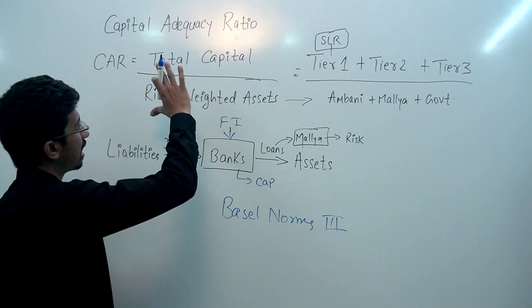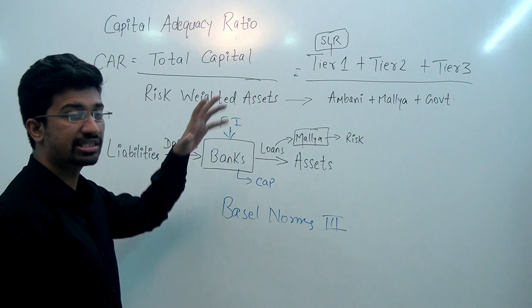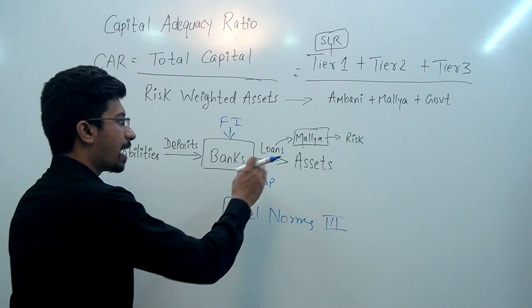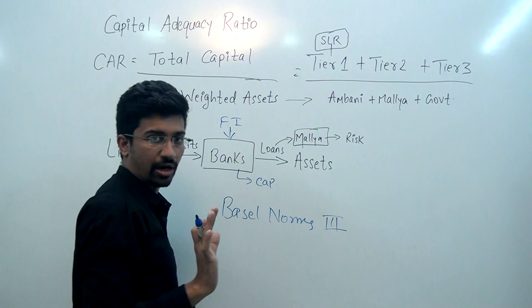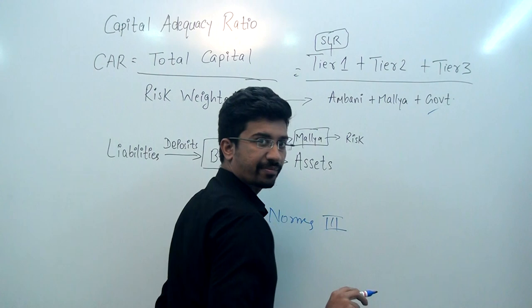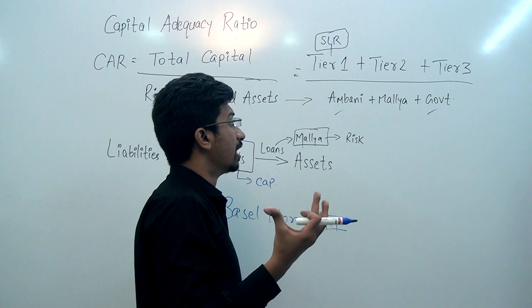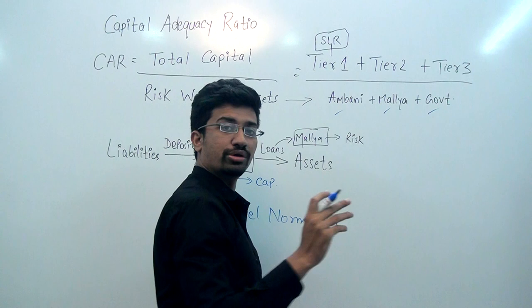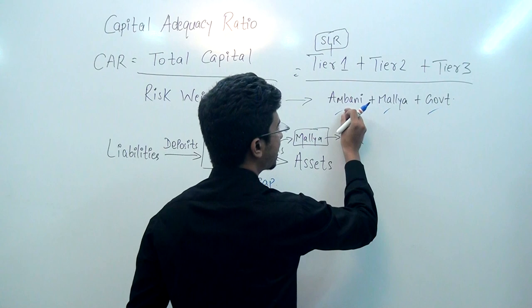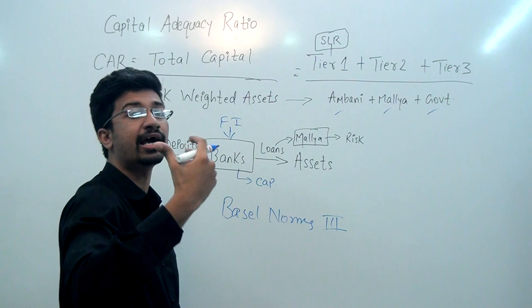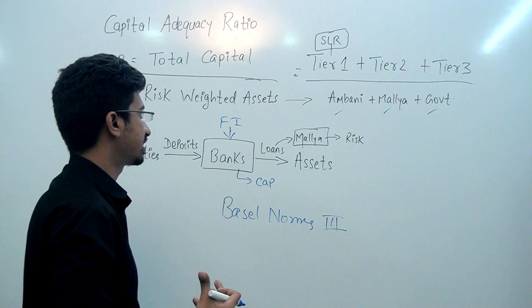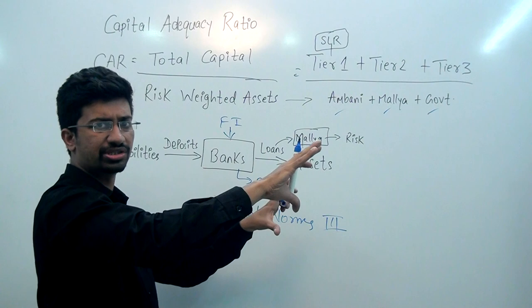Capital Adequacy Ratio is very easy to understand now. It is: Total Capital held by the bank, divided by Risk-Weighted Assets. For example, suppose a bank has given loans to three people — Ambani, Mallya, and the Government. A loan to the government is completely safe. A loan to Ambani has some risk — suppose Jio did not work at all. And a loan to Mallya is 100% going to default. So different risk weightages are assigned based on the loan amount and the sector it was given to. This final weightage is called Risk-Weighted Assets — how much risk exists on all the loans/assets given.